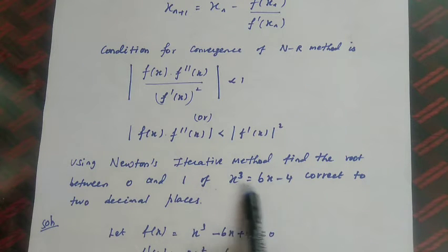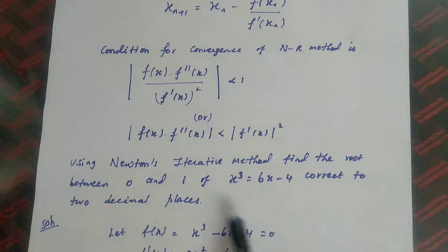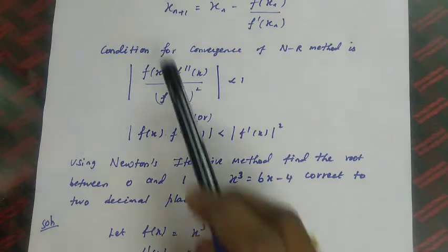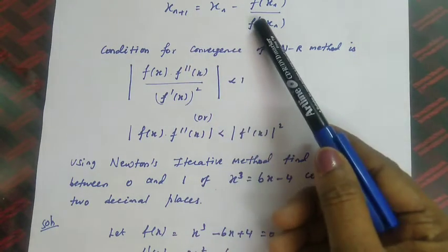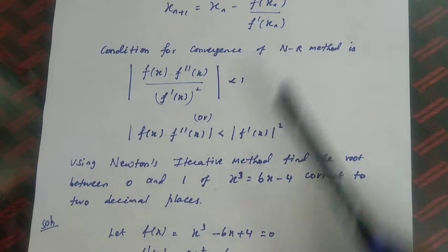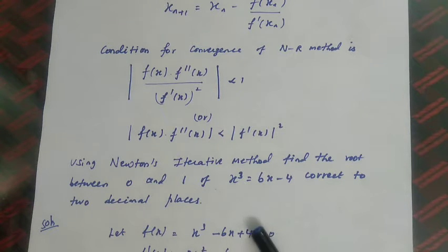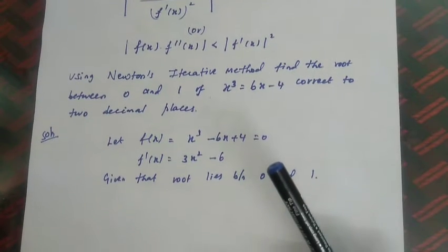We take the given equation: f(x) = x³ - 6x + 4 = 0. In the NR formula we need f'(x), so differentiating: f'(x) = 3x² - 6. Differentiation of x³ is 3x², of -6x is -6, and the constant term gives 0.